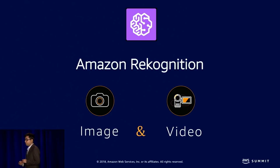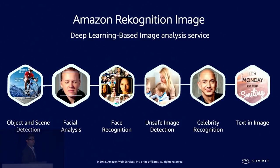Let's look at what the capabilities are today for Amazon Rekognition. Starting with image, we have six capabilities, and we've been iterating at a fast clip to add new ones. We started in November 2016 at re:Invent and launched with the first three: object and scene detection, which tells you what objects, scenes, or concepts are in an image; facial analysis, which detects faces and analyzes attributes such as age, gender, and demographics; and facial recognition, where you can create a database of faces and search against it.